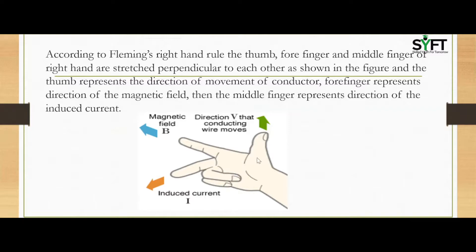Here in the image you can clearly see that the thumb represents the direction of the movement of the conductor, the forefinger represents the direction of the magnetic field, and the middle finger represents the direction of the induced current.